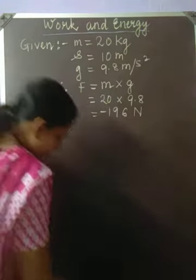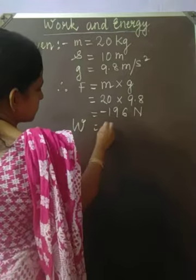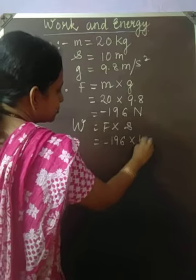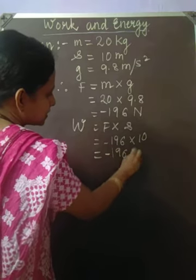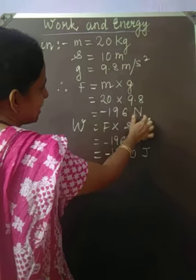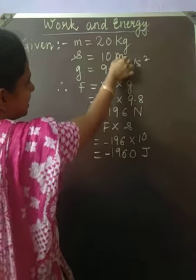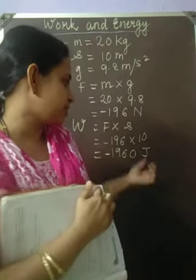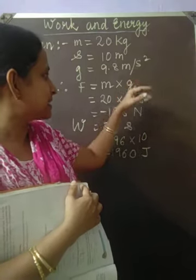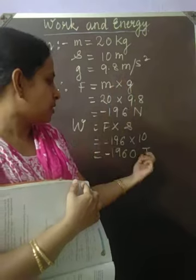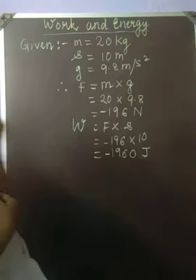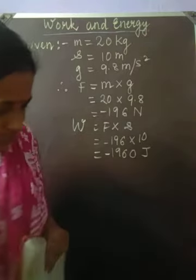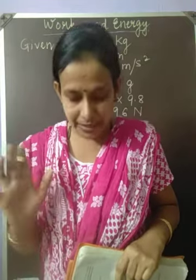Now substitute this value of force in the formula: W = F × S. Force is −196 newtons and displacement is 10 meters. So the answer is −1960 joules. Since both force and displacement are in SI units — newtons and meters respectively — the unit of work becomes joules. The negative sign simply indicates that force and displacement are in opposite directions. This completes the first problem.